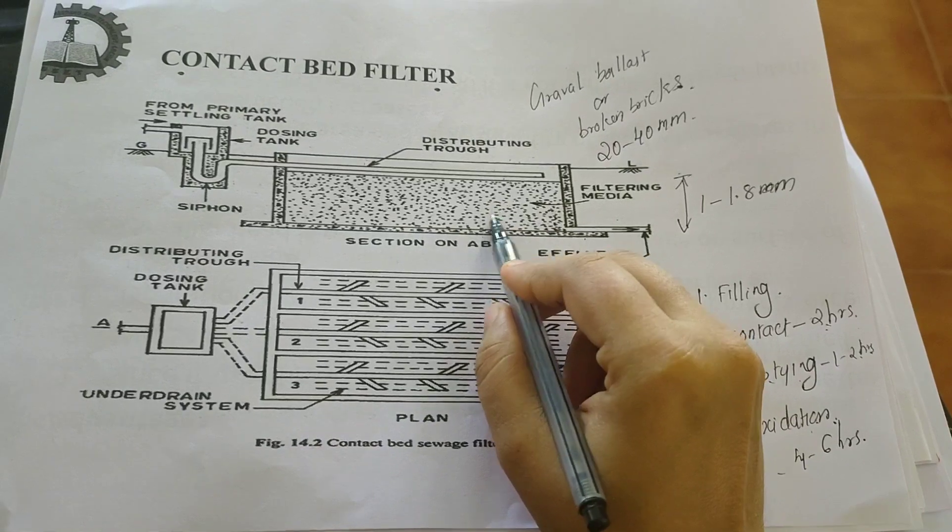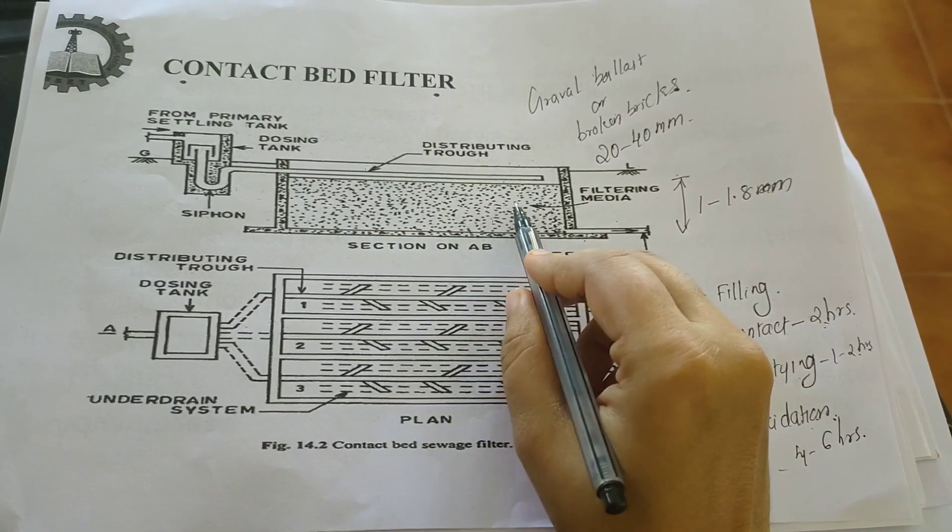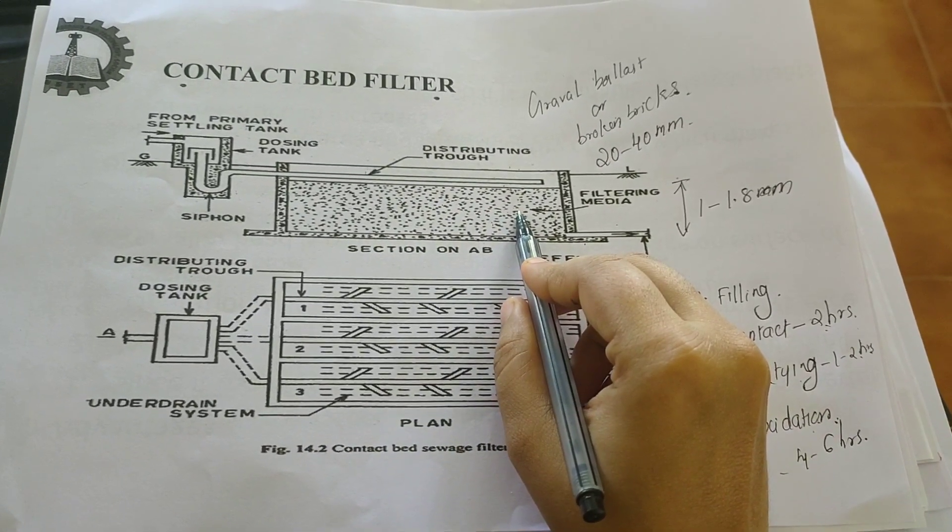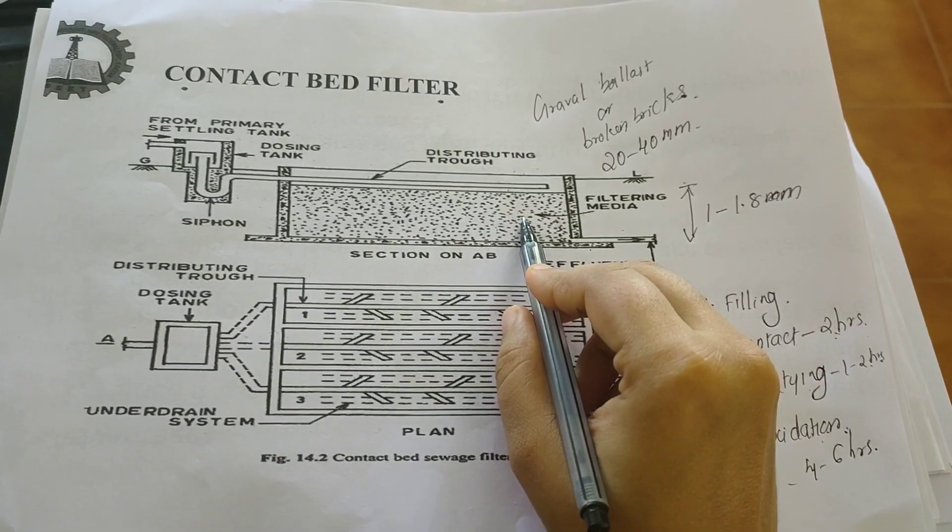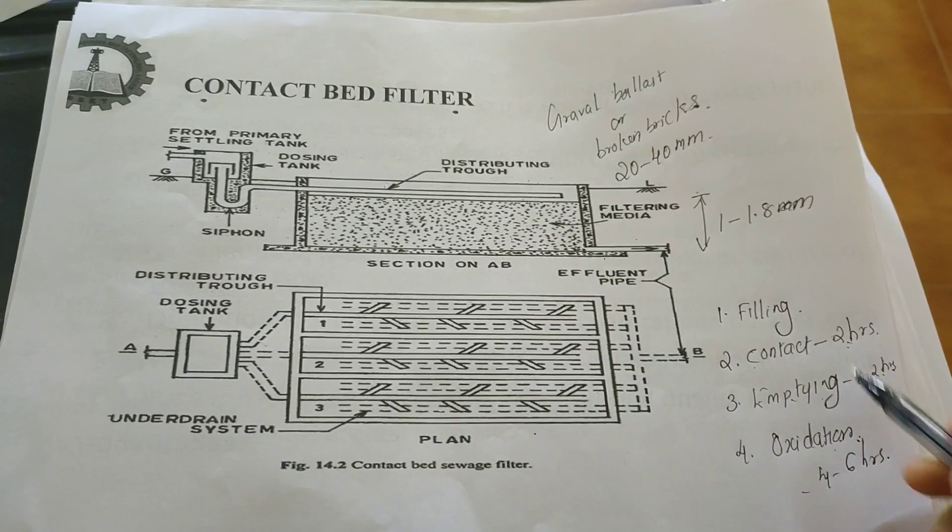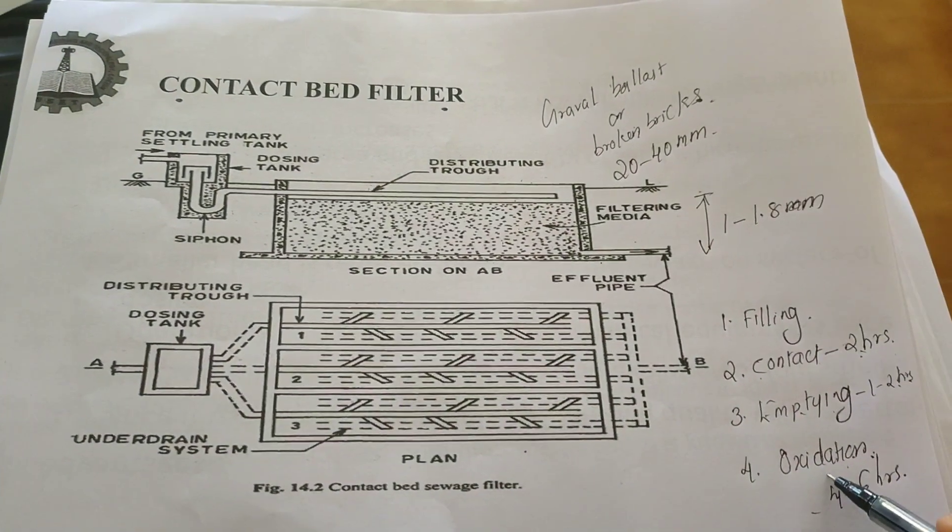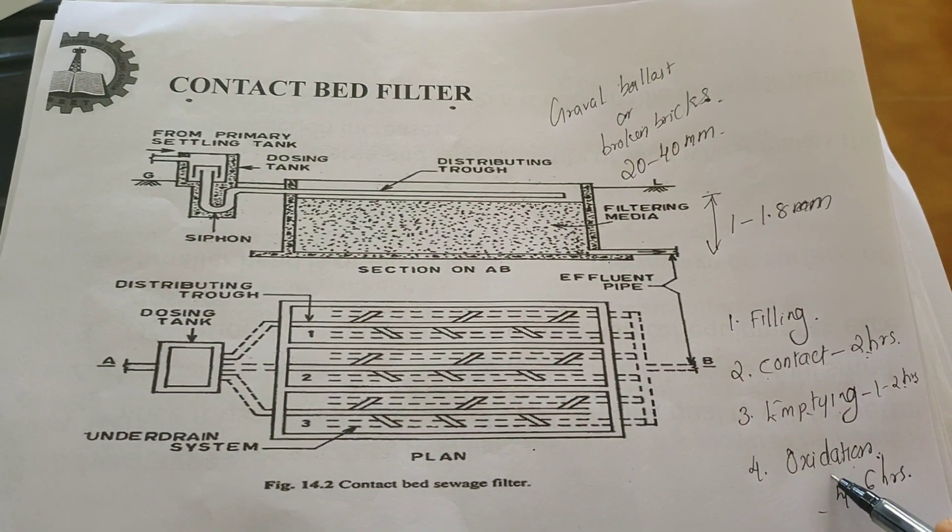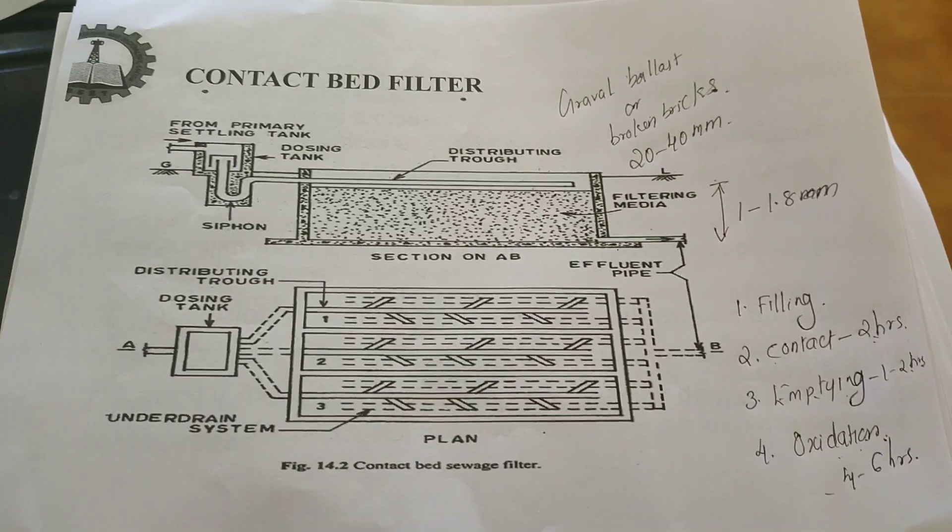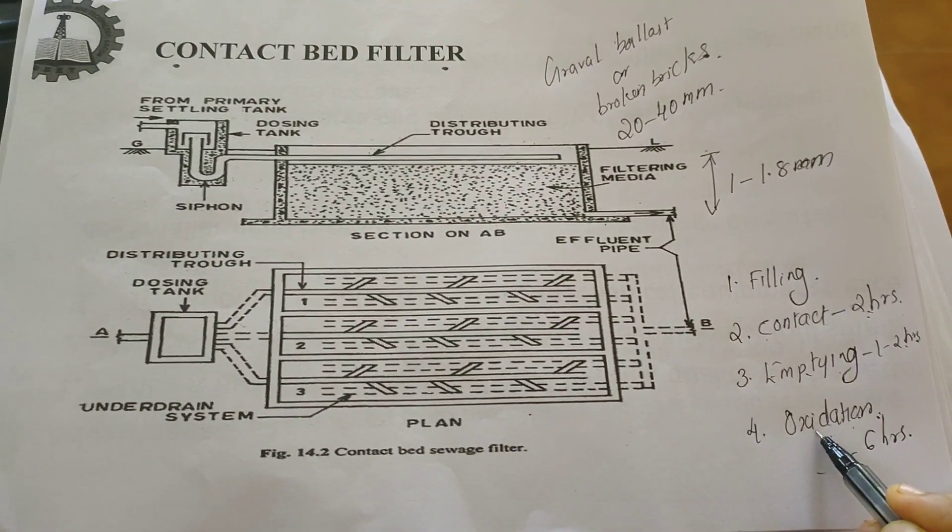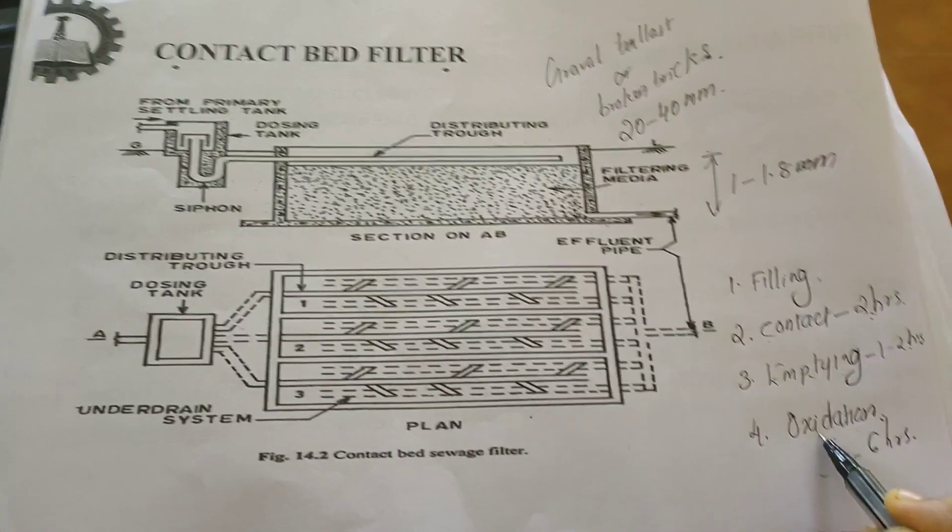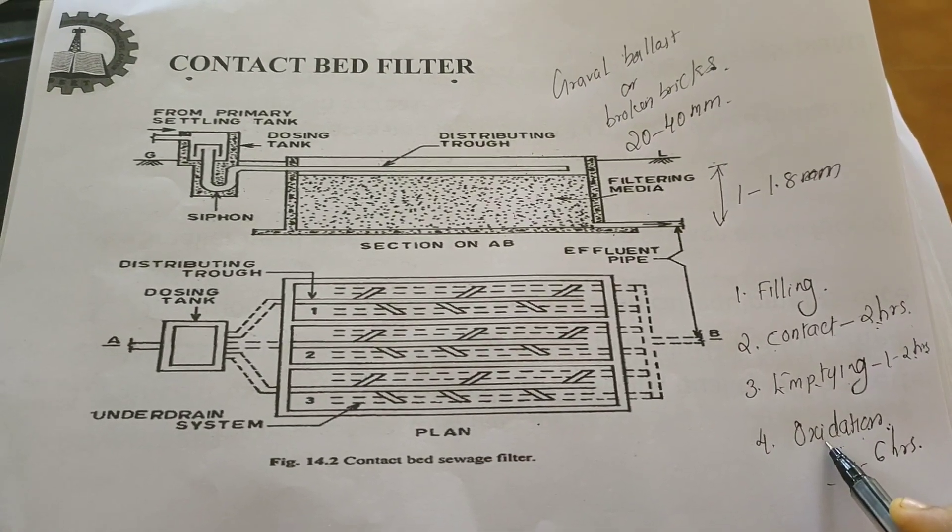So this intermittent sand filter and also contact bed filters are aerobic treatment methods which are also attached growth processes. This is how this contact bed filter works. The stabilized organic matter after this oxidation will be washed off during the next filling.